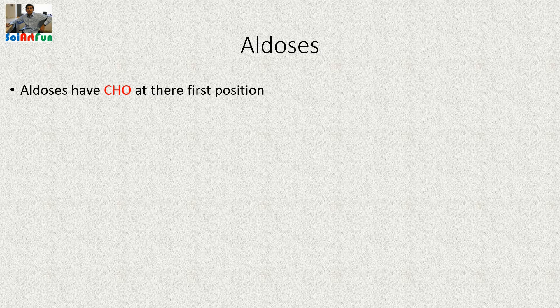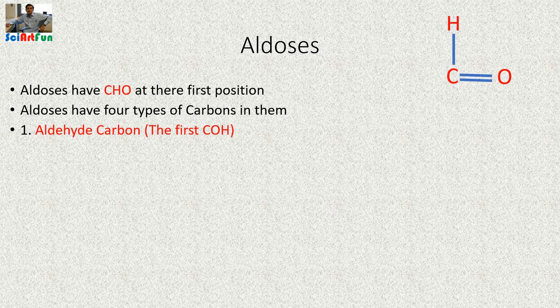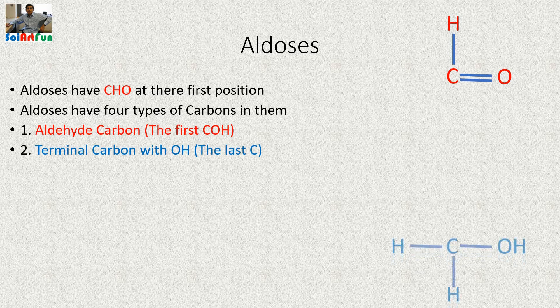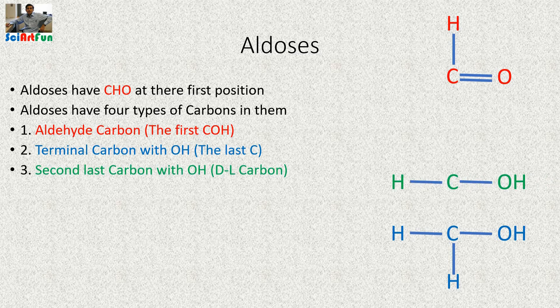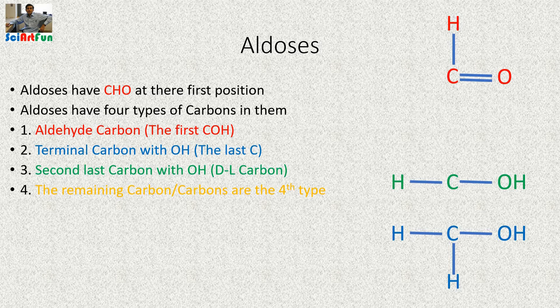Aldoses have an aldehyde group at their first position and have four types of carbons. The first carbon is always the aldehyde carbon, and then we have the last carbon at the terminal end. The third type is the second-to-last carbon, also called the penultimate or DL carbon, because the orientation of the hydroxyl group on this carbon tells us whether the sugar is a D isomer or an L isomer. The remaining carbon or carbons are called the fourth type.